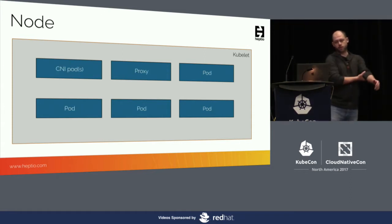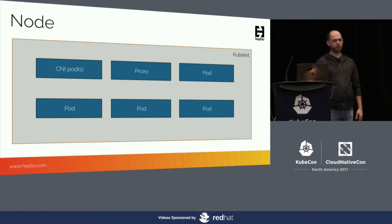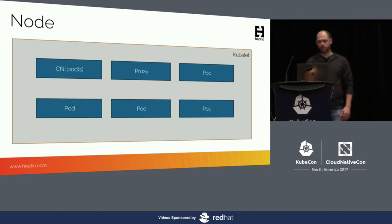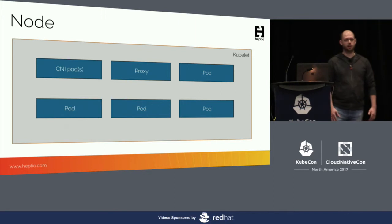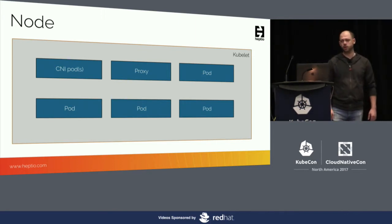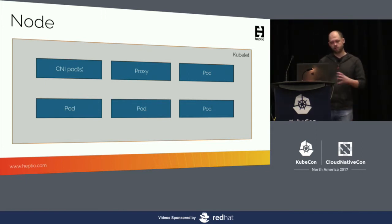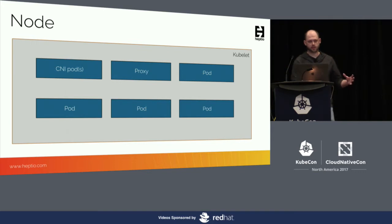On the nodes, we also have kubeproxy and CNI pods for networking, plus all of your containerized workloads in the form of pods. As we start to think about how to design a DR strategy for this new Kubernetes environment, we really need to think about where the state is within this environment — which components are stateful, and which are stateless.